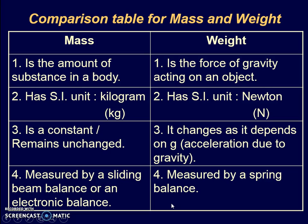In summary, here are the differences between mass and weight. Mass is the amount of substance in the body; weight is the force acting on the body. Mass has SI unit kilogram; weight has SI unit Newton. Mass is a constant and will not change; weight changes depending on the g value. To measure mass we use a sliding beam balance or electronic balance; to measure weight we use a spring balance, also called a Newton meter.